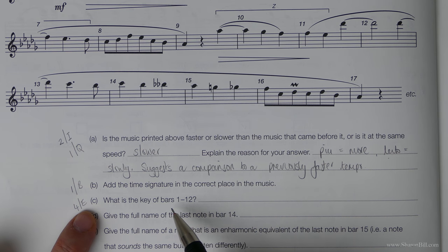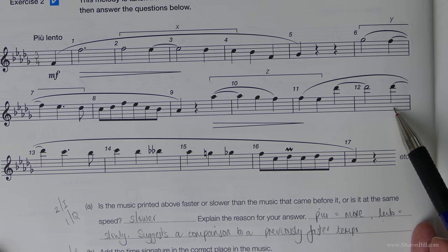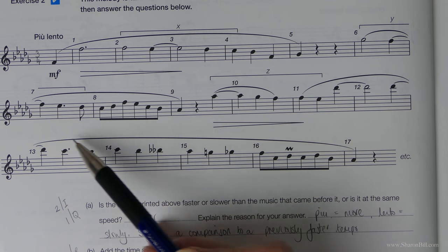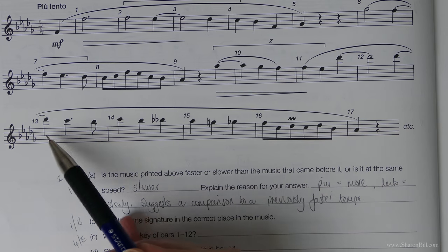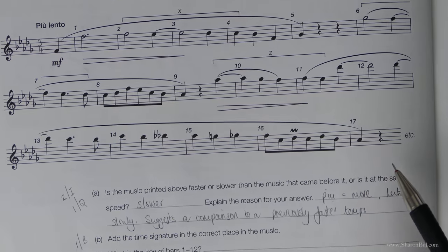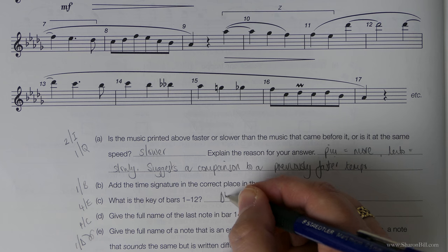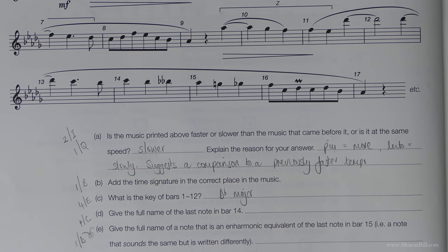Section E would give us the answer to this question. What is the key of bars 1 to 12? So we've got this key signature here. And all the way up to bar 12, there are no more accidentals to sort of change that. But it gets a little bit more interesting here, but we're not asked to take notice of that. So we need to know a key signature with 5 flats. And that would be D flat major.